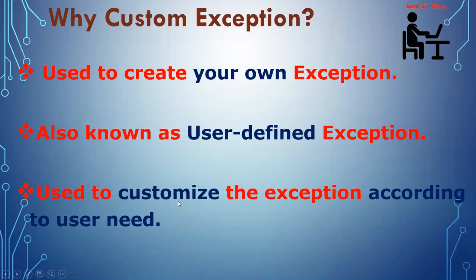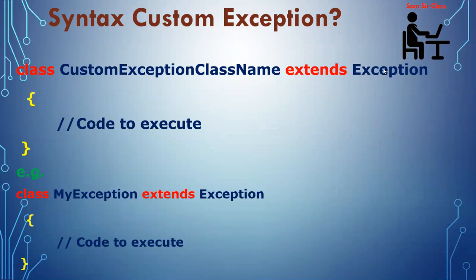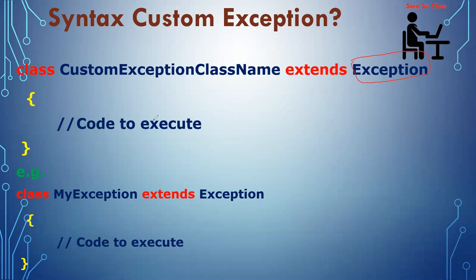Now, how to define an exception by the user's choice, which is known as user-defined exceptions? This is required to customize the exception according to the user's requirement. Let's discuss the syntax. You have to provide your own class name — like arithmetic exception, you provide your own class name — but since it will follow all the properties of exception class, it has to inherit the parent class, which is Exception. So you write: class MyException extends Exception. That makes it a user-defined exception.